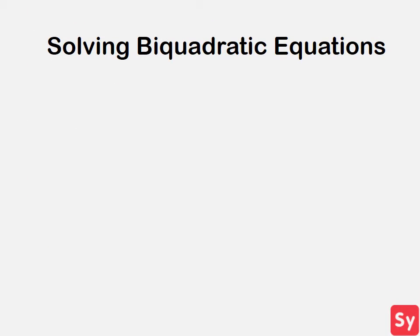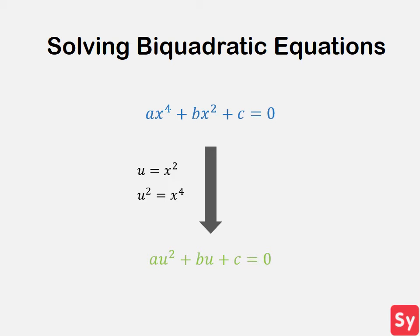A bi-quadratic equation is a quartic equation with no odd powers. We see bi-quadratic equations in this form. In order to solve them, we want to rewrite them to look like a quadratic equation. So what we do is set u equal to x squared, which means u squared is equal to x to the fourth. When we rewrite the equation in terms of u, we get a quadratic equation we know how to solve. An important thing to remember is that we need to write the answer in terms of x and not u. Now let's see some examples.